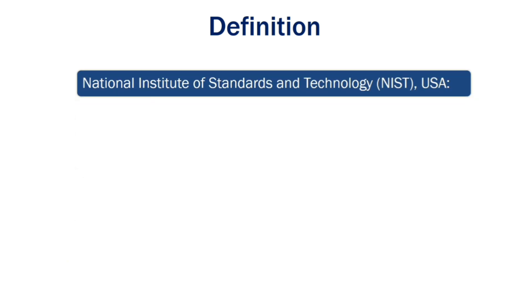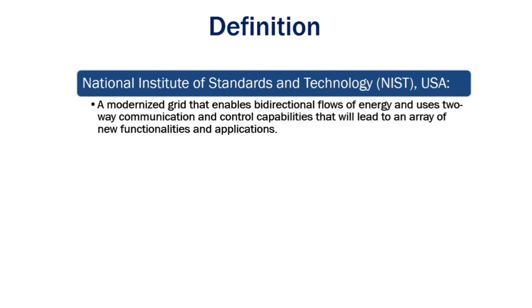When we define smart grid, according to the National Institute of Standards and Technology (NIST), USA, smart grid is a modernized grid that enables bidirectional flow of energy and uses two-way communication and control capabilities that will lead to an array of new functionalities and applications.